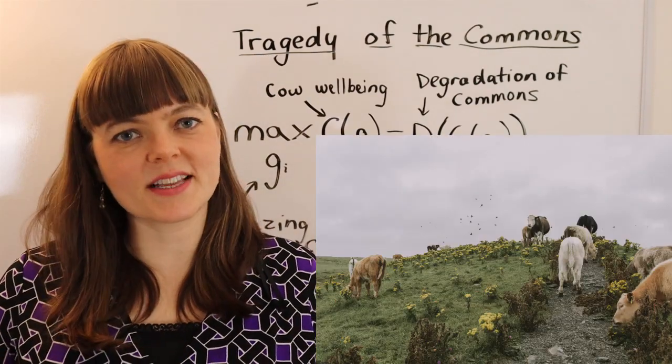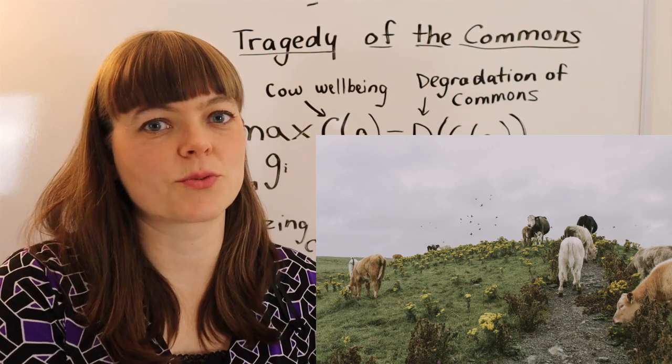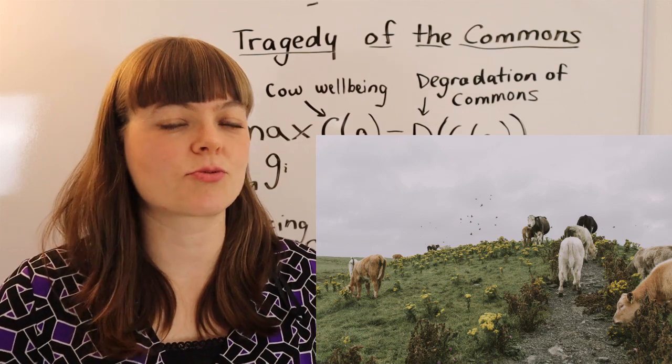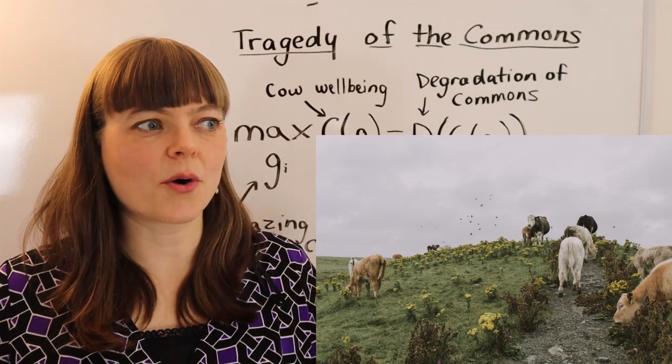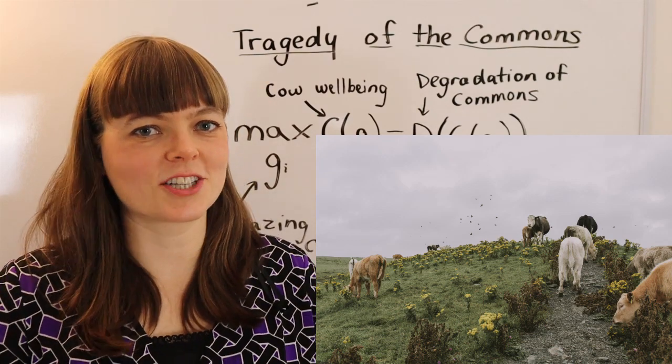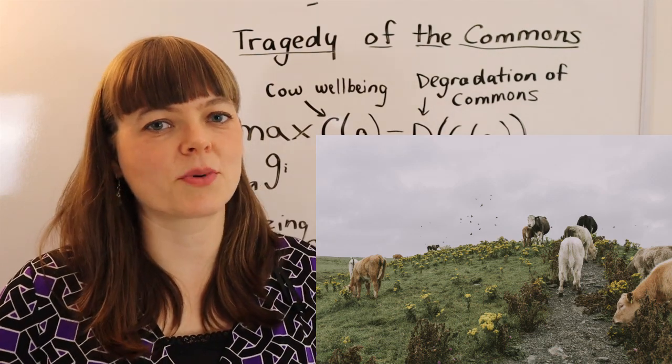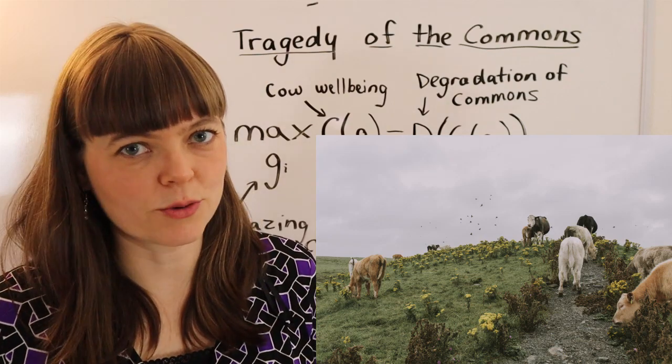What happens is that everybody lets their cows graze way too much and therefore the supply of grass depletes, it doesn't replenish, so they lose the commons. It just becomes like a dirt pile rather than an actual commons with grass where people can graze their cows.